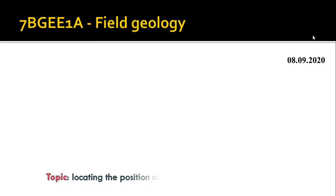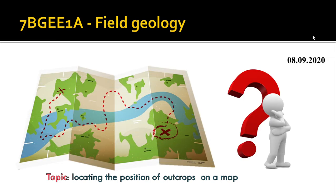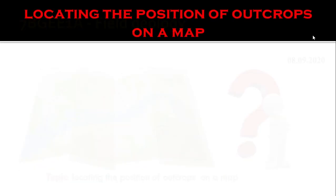Good morning students. We are in our regular class lecture for field geology. Today's topic is locating the position of an outcrop on a map. As a geologist, it is our primary task to look for an outcrop in the field. But after finding our outcrop, we have to mention the same outcrop location on the map. There are a few methods to locate the position of ourselves as well as the outcrop on a map.